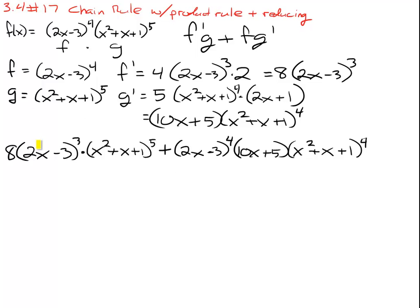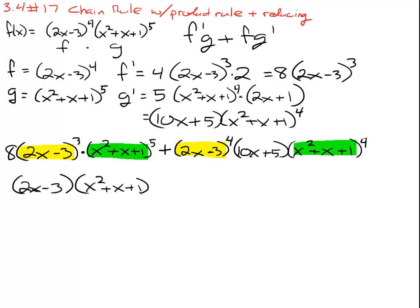Both pieces have a (2x minus 3) to a power and both pieces have (x squared plus x plus 1) to a power. The leftover linear terms don't share common factors — we can't factor a 5 out of both. We have 3 of (2x minus 3) on one side and 4 on the other, so we take out 3. We have 5 of (x squared plus x plus 1) on one side and 4 on the other, so we take out 4.